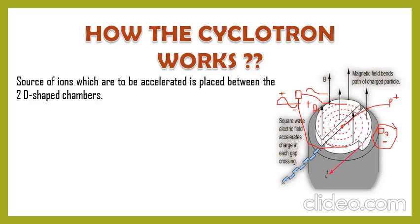The proton is attracted towards D2 and comes towards it. Due to the magnetic field it revolves on a circular path, but inside the D the magnetic field is zero. According to Gauss's law, the magnetic field inside a hollow cylinder is zero — it is only outside the hollow body that the magnetic field has an effect. So the particle gains energy when it is outside the D's, and with this energy it enters D2 and starts revolving on a circular path.